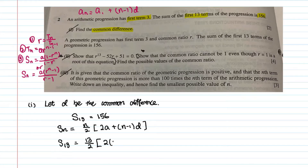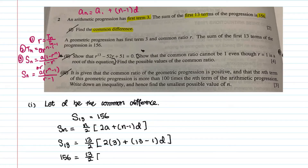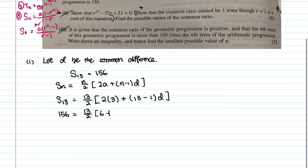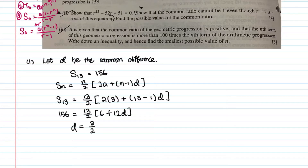...times 2×3, which is the first term as given, plus (13−1) times d which is unknown. Working this out: 156 = (13/2)(6 + 12d). Dividing 156 by 13/2 and solving, you find d = 3/2. So part one is very simple.